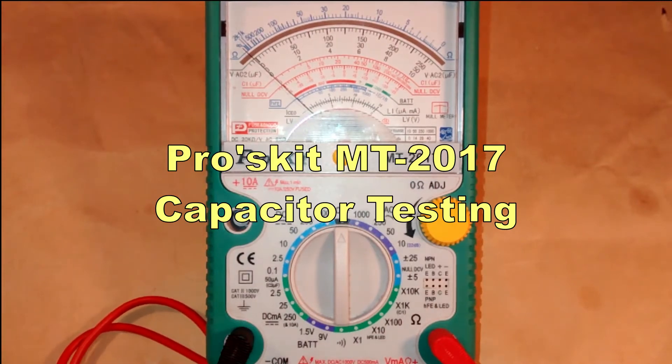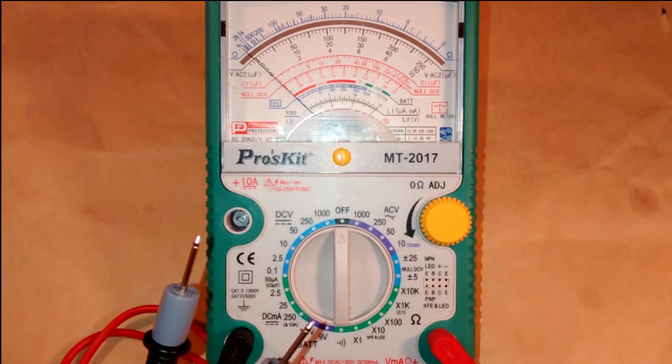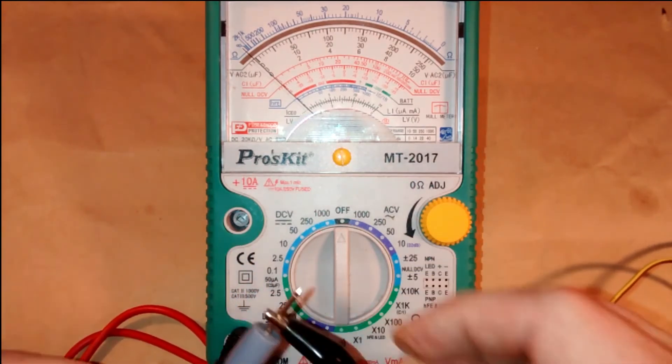One of the handy features of the Proskit MT2017 is the ability to check capacitors. I'm going to put some crocodile clips on the probes to make it easier.